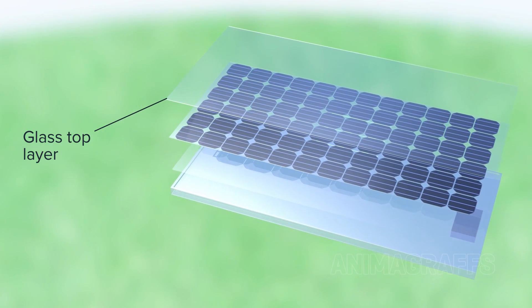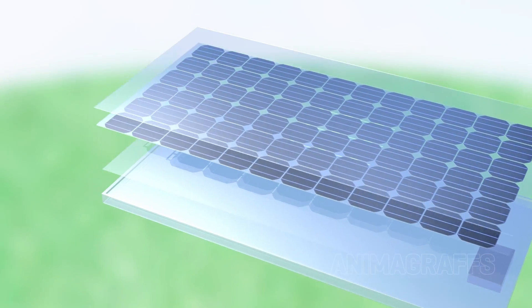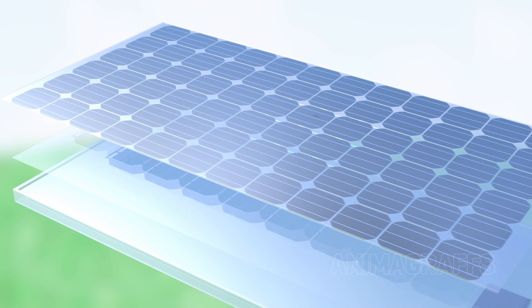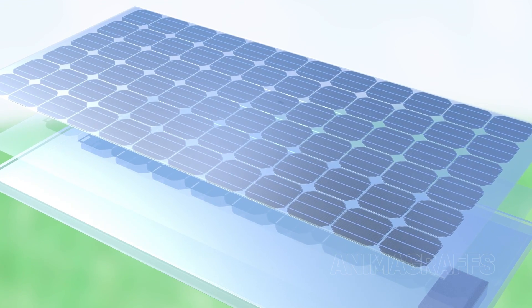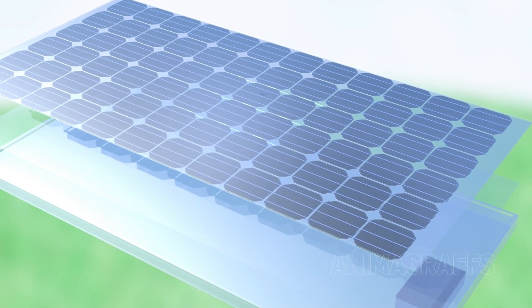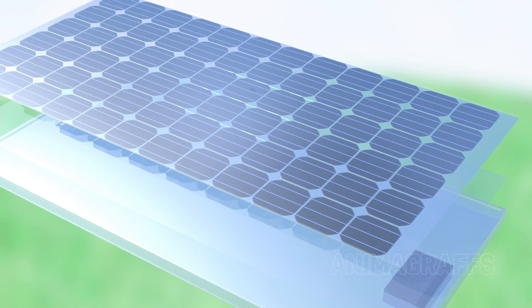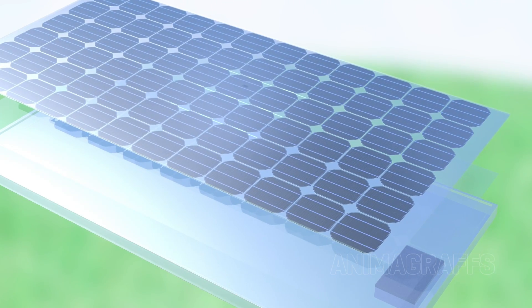Glass top layer. A thick layer of low iron glass protects the cell from outside conditions and provides structural strength while also allowing maximum light passage. Low iron reduces the reflective impurities that give normal glass a faint greenish-blue tint.